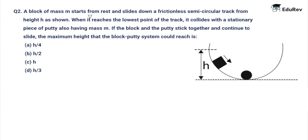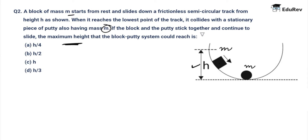Question number 2: A block of mass M starts from rest and slides down a frictionless semicircular track from height H. When it reaches the lowest point of the track, it collides with a stationary piece of putty also having mass M. If the block and the putty stick together and continue to slide, what is the maximum height the block-putty system could reach?